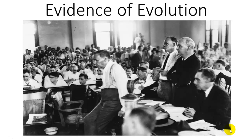This is a picture taken at what is called the Scopes Trial. A teacher in Tennessee had been teaching evolution to students. The problem was that at the time, teaching evolution in school was illegal — there was a law on the books saying you could not teach this theory in public schools. They took advantage of this trial; eventually the teacher was convicted because it was against the law.